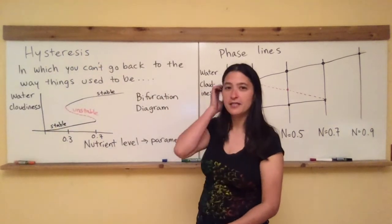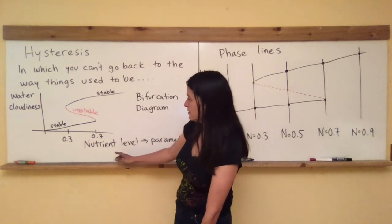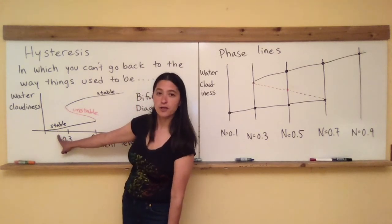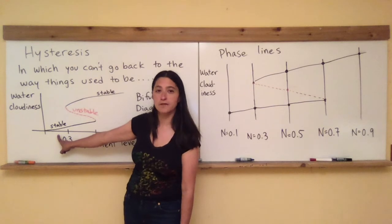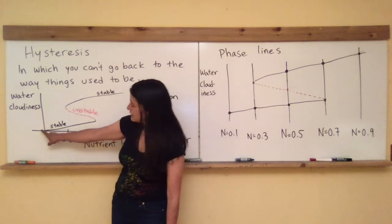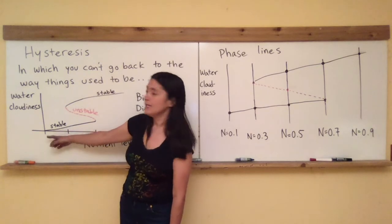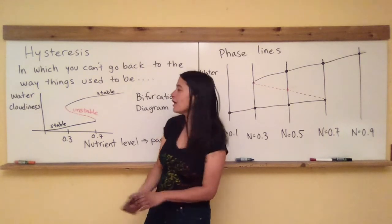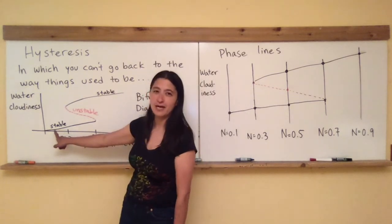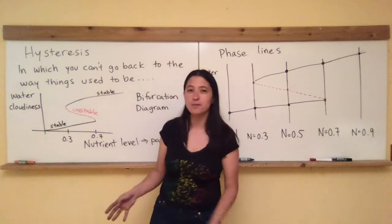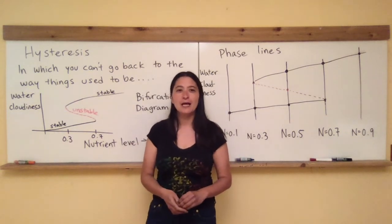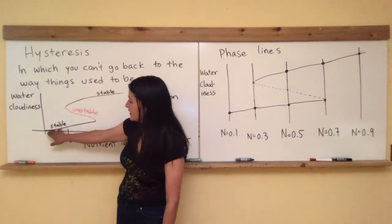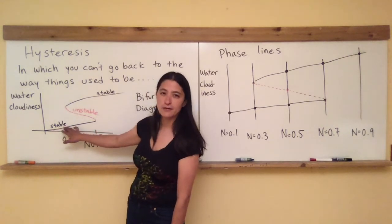So remember that here we're talking about fixing the nutrient level. So let's say the nutrient level, we'll pretend it's at 0.2. What is the predicted water cloudiness? Well, that's going to be the location of the single stable equilibrium point which is at a very low value of water cloudiness. If I had put tick marks on here, I could give you a number for that but we're just playing a pretend game. So I'll just call it a little bit of cloudiness. I can see the bottom of that pond and I have no problem jumping in and swimming around.